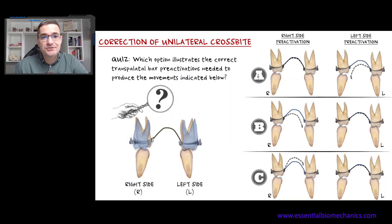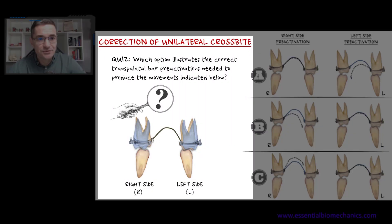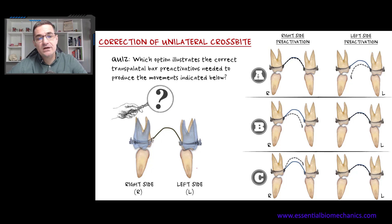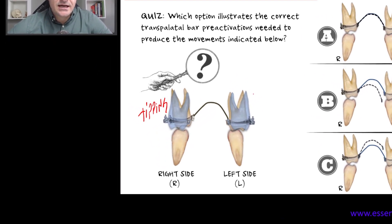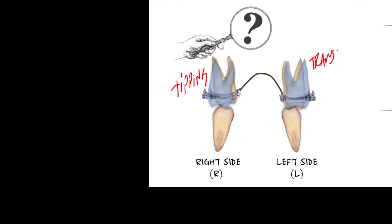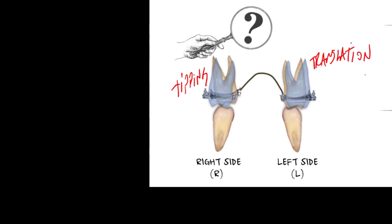But let's jump into the question of our quiz. The question was: which option illustrates the correct transpalatal bar pre-activations needed to produce the movements indicated below? The movements indicated are very useful if you want to correct a unilateral posterior crossbite, a very common malocclusion. This figure illustrates a tipping movement on the crossbite side and a bodily movement — a translation — on the non-crossbite side.